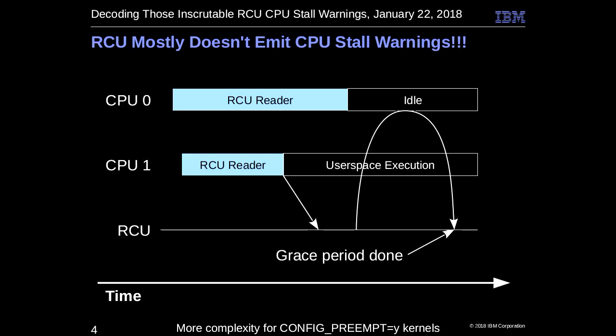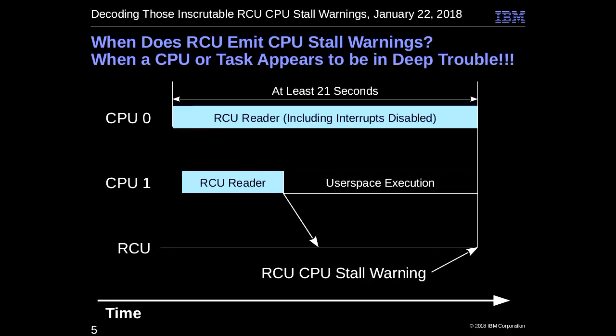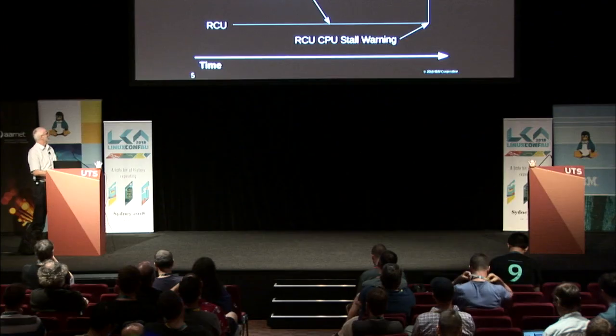The time we get stall warnings is when something like this happens: CPU 0 is in a reader or doing something that is preventing RCU from progressing for a very long time. In mainline it's 21 seconds. A number of the distro kernels keep it at 60 seconds. For example, having interrupts disabled — if you have a CPU with interrupts disabled for 21 seconds, you've got a serious problem. RCU is letting you know that you've got a long-term rather non-responsive CPU.